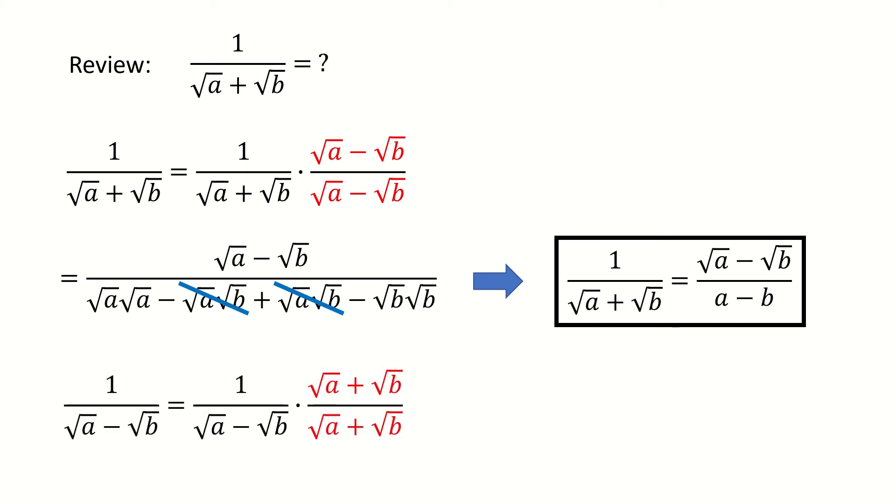For the 1 over square root a minus square root b case, we can play the similar trick here by multiplying square root a plus square root b on both the numerator and the denominator. Then we got here. From this review, we can see we know how to deal with the two-term cases.